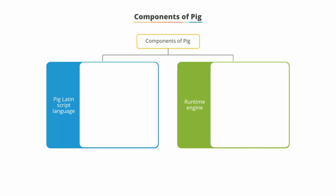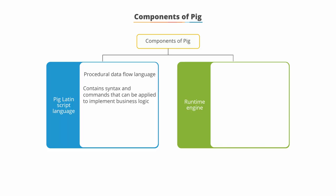The PigLatin script is a procedural data flow language. It contains syntax and commands that can be applied to implement business logic. Examples of PigLatin commands are load and store.